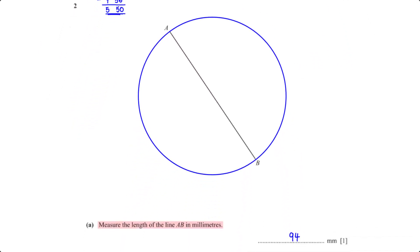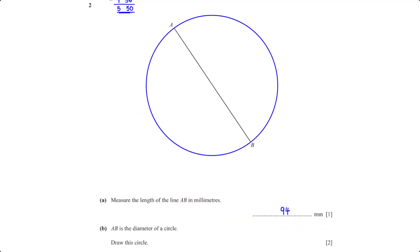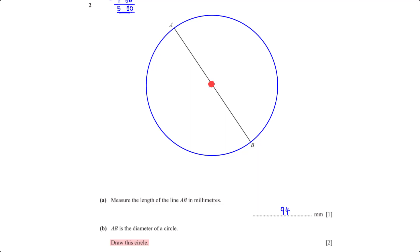Measure the length of line AB in millimeters — when we measure AB we get 94 millimeters. AB is the diameter of a circle; to draw the circle we first need the radius. We divide 94 mm by 2, giving 47 mm. We set the compass width to 47 mm, stand at the midpoint of AB, and construct the circle.